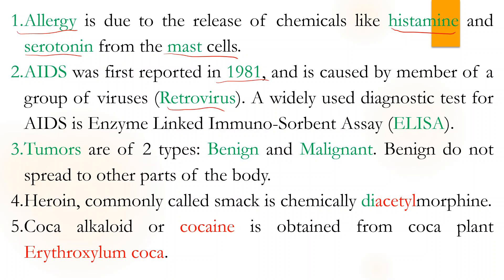The ELISA test is used for AIDS diagnosis. Tumors are of two types: benign and malignant. Benign means kind — it doesn't spread much. Malignant means bad — it spreads to other body parts. You can live with benign cancer.